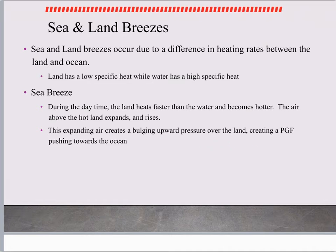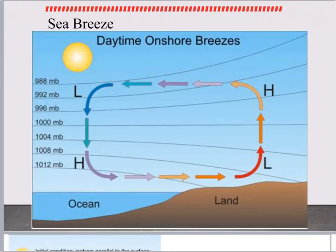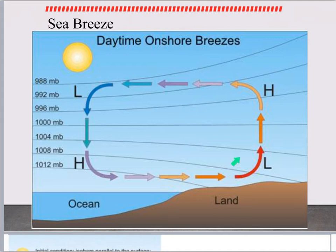This will create a pressure gradient force that's going to push towards the ocean. In the diagram, we have a sun because it's daytime. The land heats up, therefore the air rises over the land. This creates higher pressure up top, so the wind goes down the pressure gradient force over to the sea. We sink over the ocean, and then it comes back. This whole circular motion is called a convection cell. If you're standing on the land, you're going to feel wind coming from the ocean — therefore, it's a sea breeze.